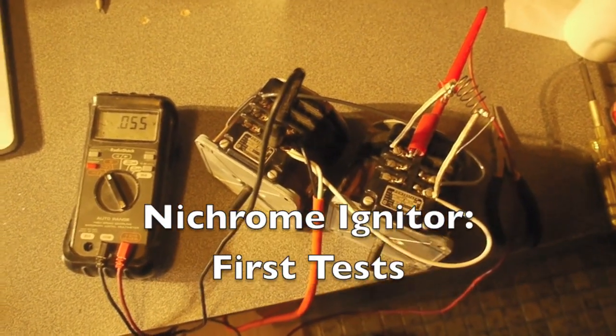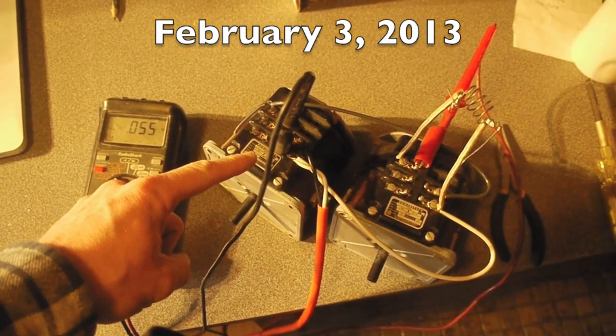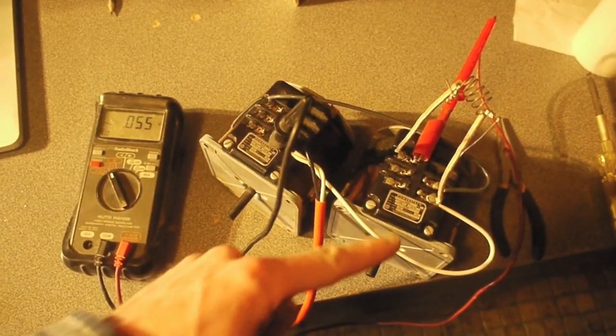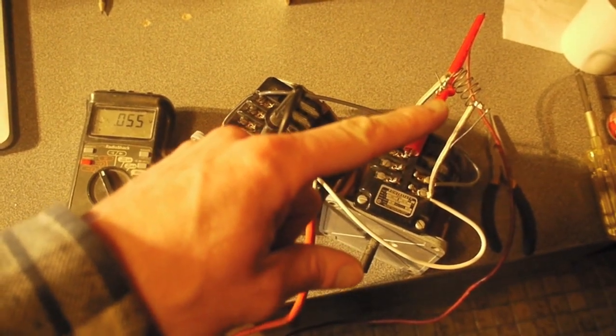So here's the test setup. We've got power coming into the first variac here, and then the output of the first variac feeding into the second variac, and then the output of that feeds into this coil up here.